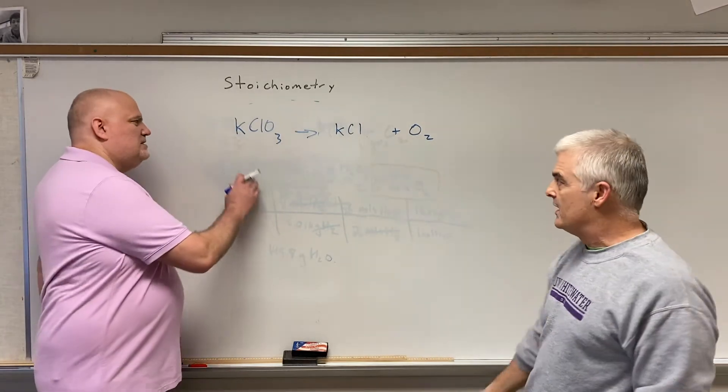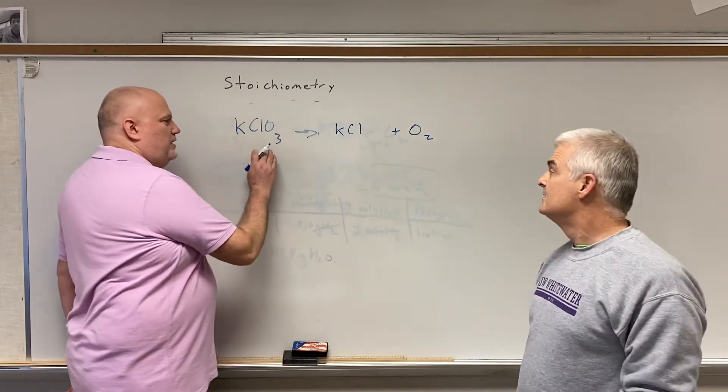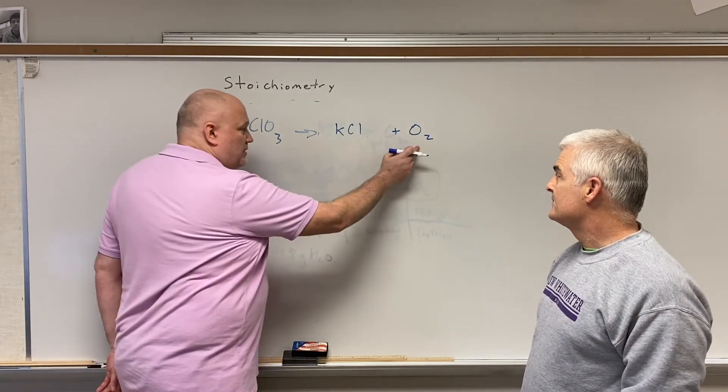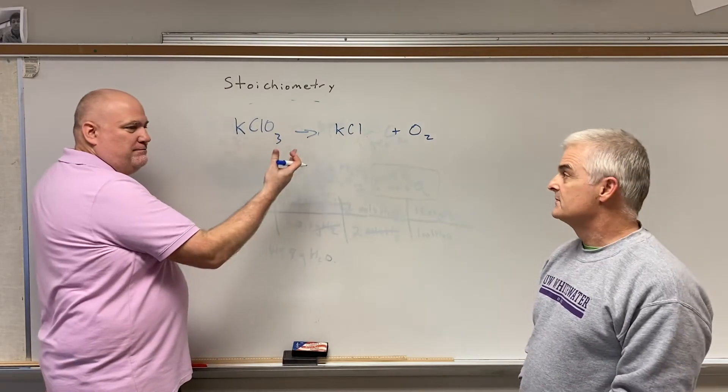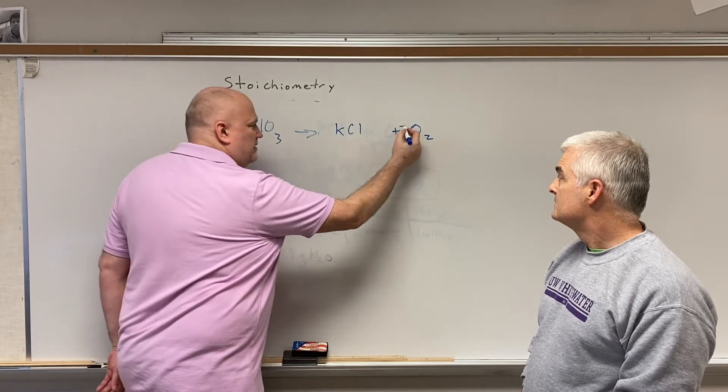Balanced chemical equation. One K here. One K here. Happy. One Cl here. Happy. Oh, no. Three oxygens here. Not happy. Two oxygens here. Now, if you have two and three. Six. Yeah. So why don't we multiply this by two, and this by three.